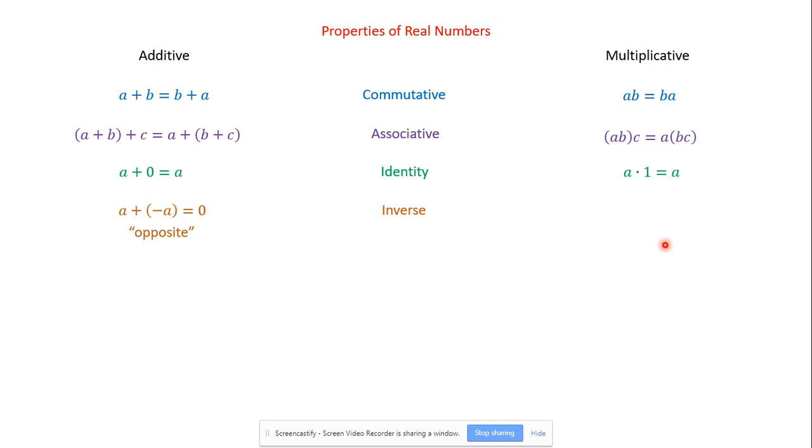How about the multiplicative inverse? What would get rid of A? Well, let's think. What could get rid of 2 to multiply by? 1 half. We would divide by 2. And so the same thing, A times 1 over A equals 1.